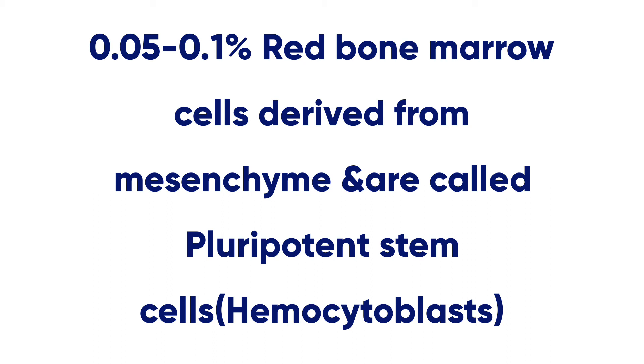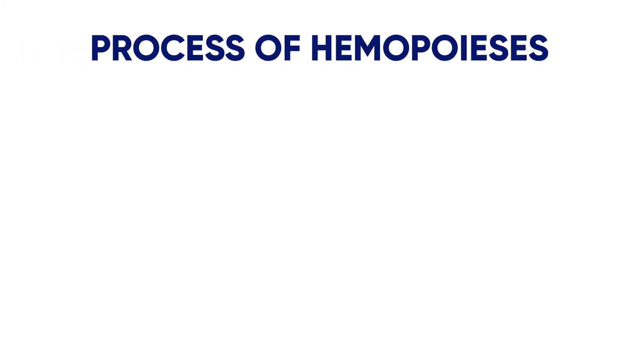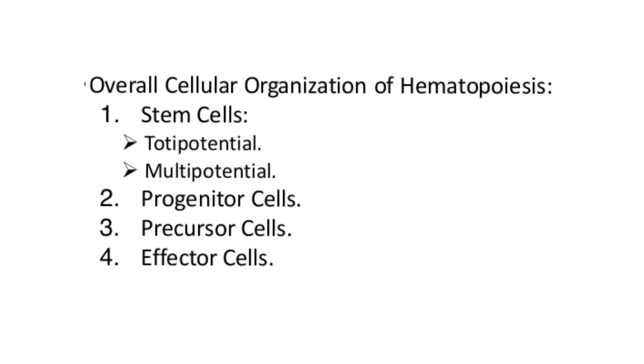About 0.05 to 0.1 percent of red bone marrow cells are derived from mesenchyme and are called pluripotent stem cells, or hemocytoblasts. Now let's discuss in detail about what happens inside the red bone marrow — the cellular pathway of hemopoiesis.